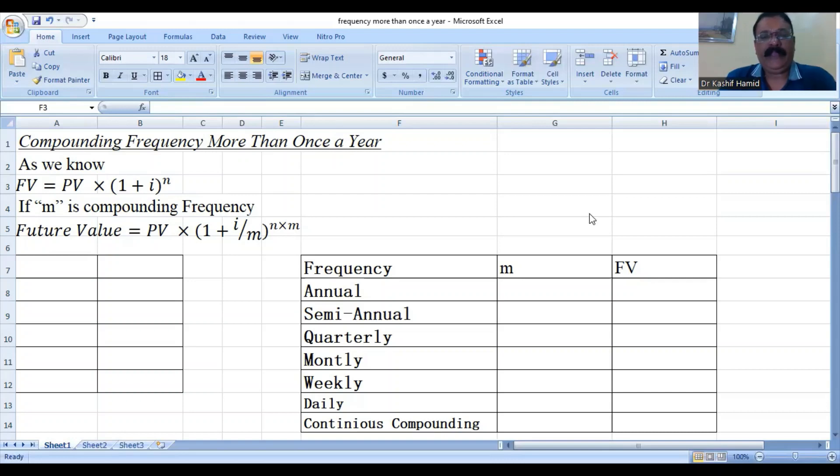Let's assume with an example, if we have present value today is Rs. 1000, interest rate is 10% per annum. Number of years, again, we are computing this future value that someone is promising us that if you deposit today 1000 and interest rate is 10% per annum for 5 years,